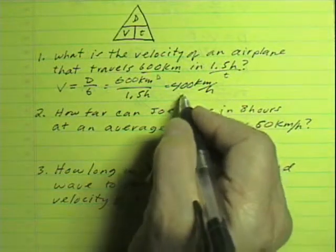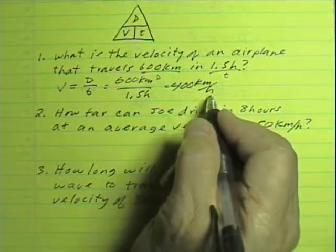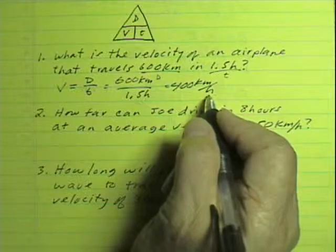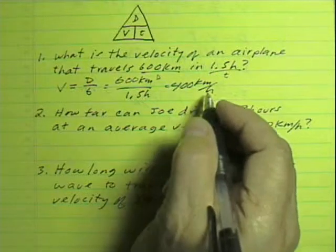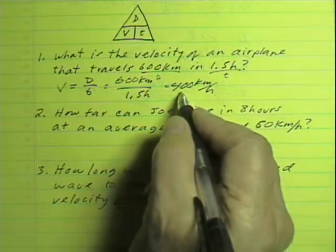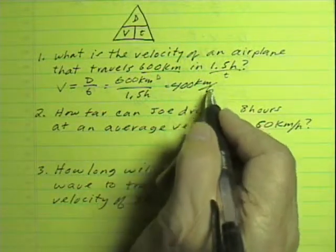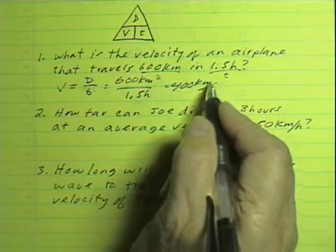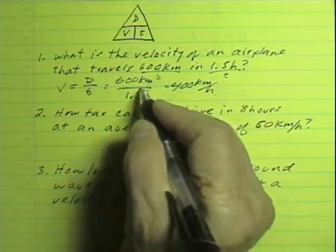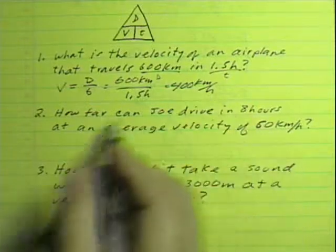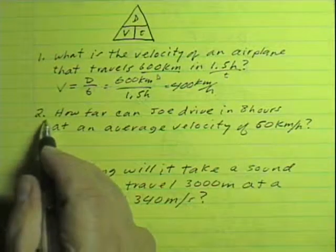If you got 400 kilometers per hour, you got that answer correct. Just remember that the answer includes both the numeric value and the unit of measurement, which in this case is kilometers per hour.